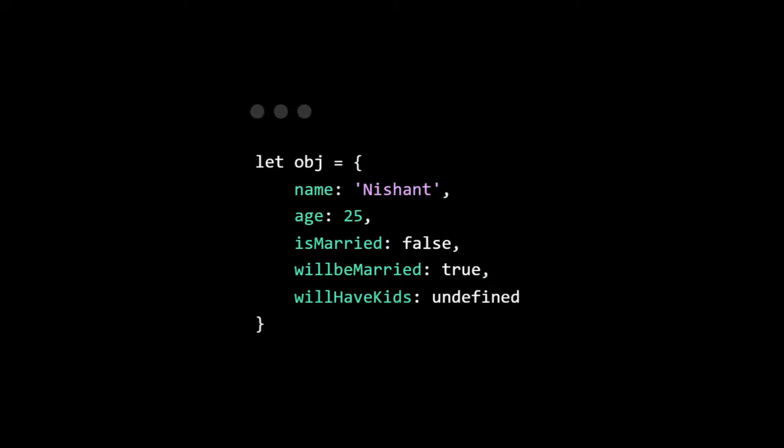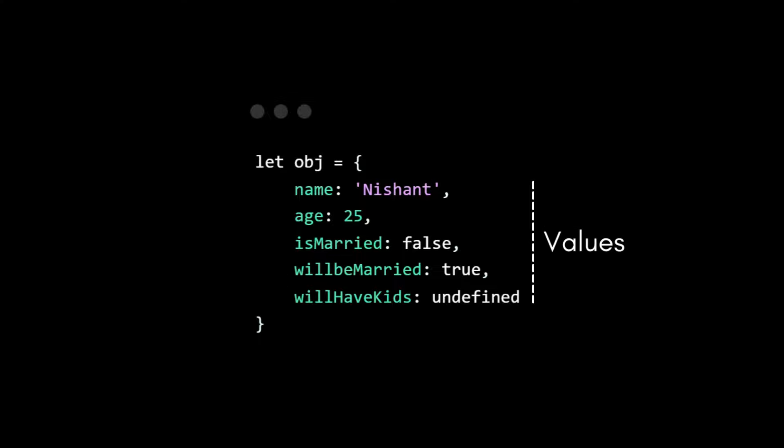Here I have an object called obj which has name, age, is married, will be married, and will have kids properties. On the left we have the keys — like name, age, isMarried, willBeMarried, and willHaveKids — and on the right we have the values like Nishan, 25, false, true, and undefined.